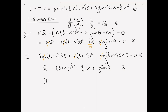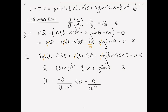And then theta-double-dot: dividing everything by (L0 + x)² since that's what's multiplying theta-double-dot, we get theta-double-dot equals minus 2*x-dot*theta-dot divided by (L0 + x) minus g*sine(theta) divided by (L0 + x). That is equation 8. We're done.